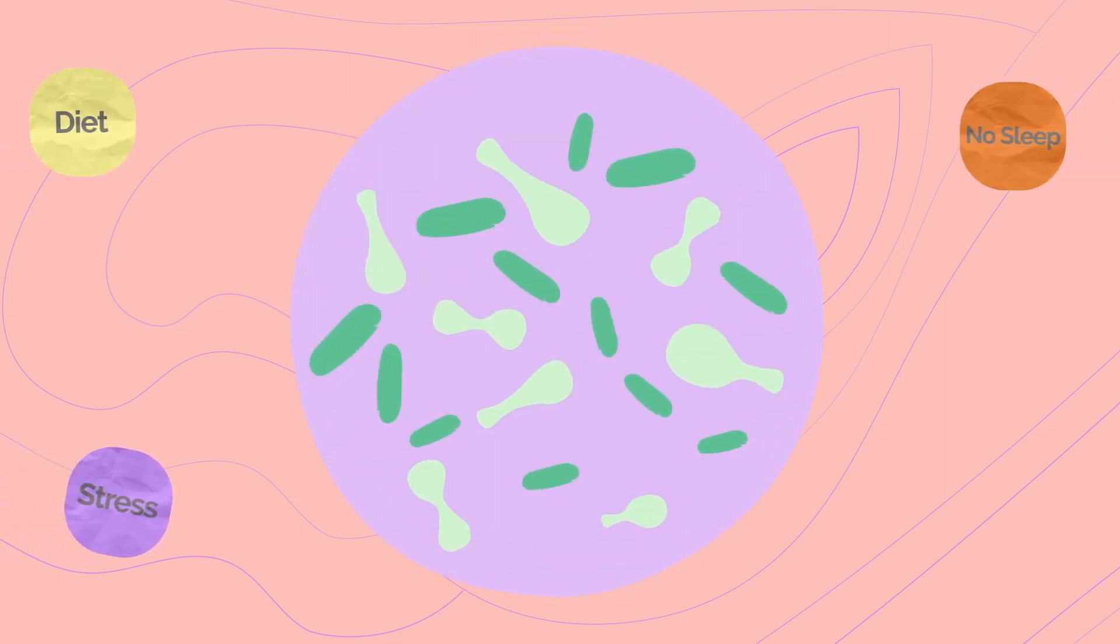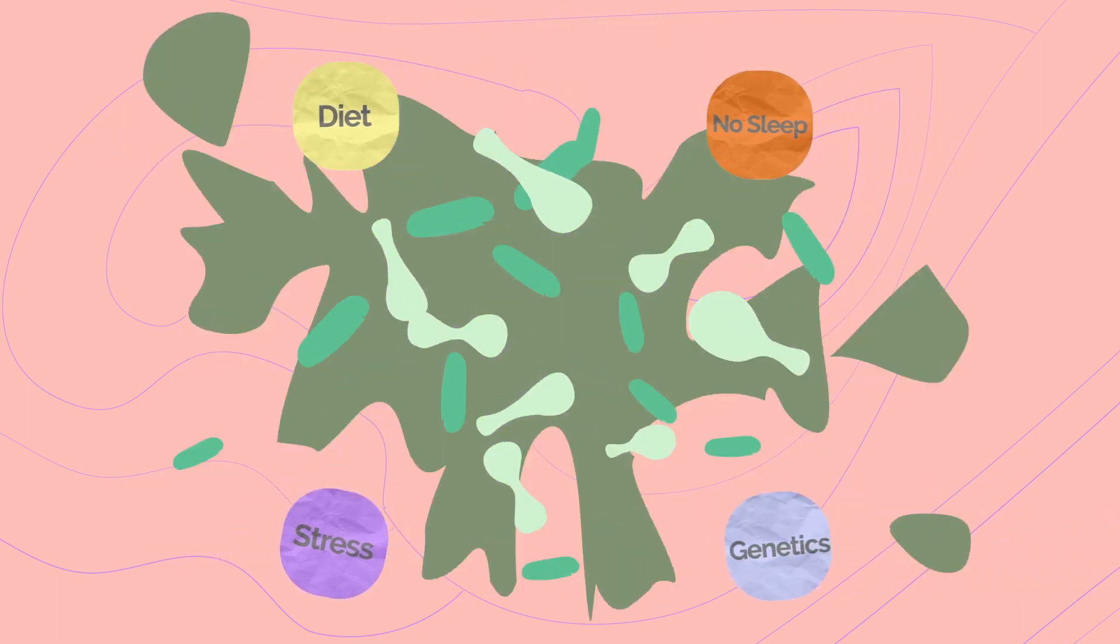Usually, this duo works together to maintain a healthy balance. But diet, stress, lack of sleep, and even genetics can impact your gut and lead to bad bacteria and fungi growing out of control.